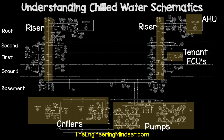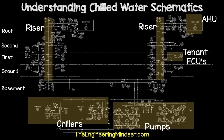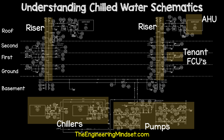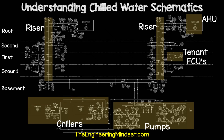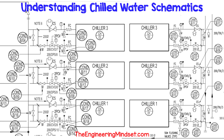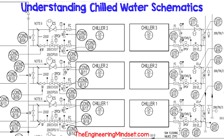Whenever I'm reading a schematic, I always start by locating the chillers, the pumps, the risers, the AHUs, and the cooling towers. This shows you how the system works, how it's all connected, what type of system it is, and where each part is located. The schematics can be quite cramped, and you'll sometimes need to see through this information to be able to follow the system.